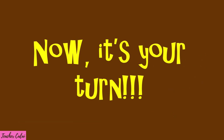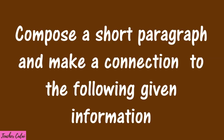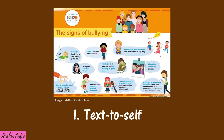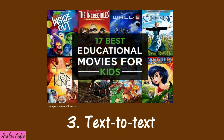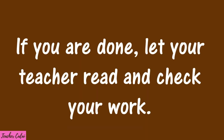Now it's your turn. Compose a short paragraph and make a connection to the following given information. Number one is for text-to-self, number two is text-to-world, and number three is text-to-text. You may go back to the first item, pause the video, and have your answer, then do the same for numbers 2 and 3. If you are done, let your teacher read and check your work.